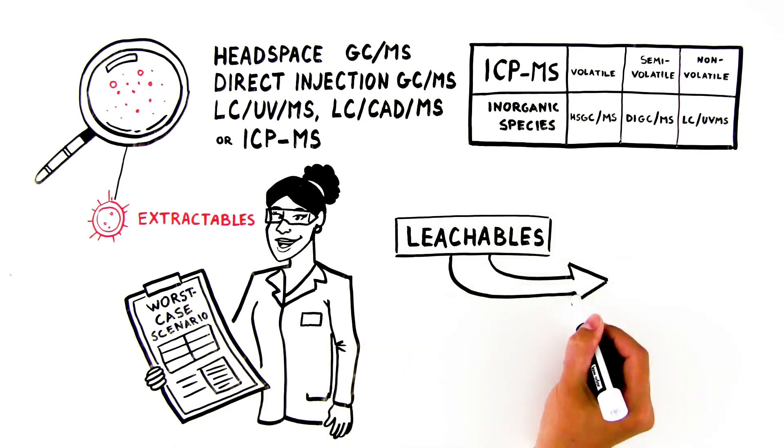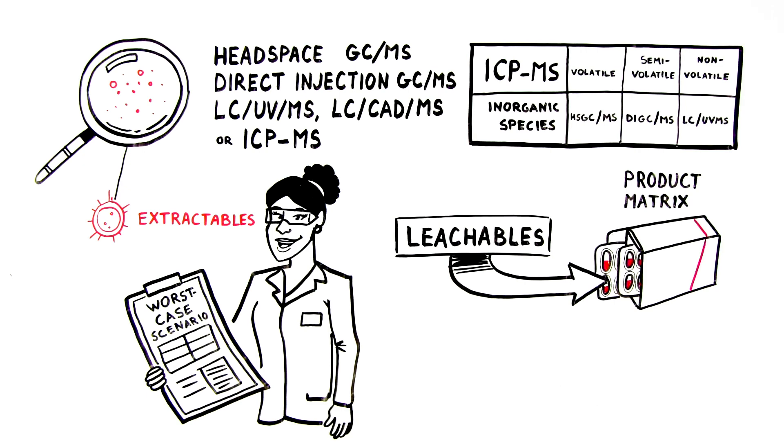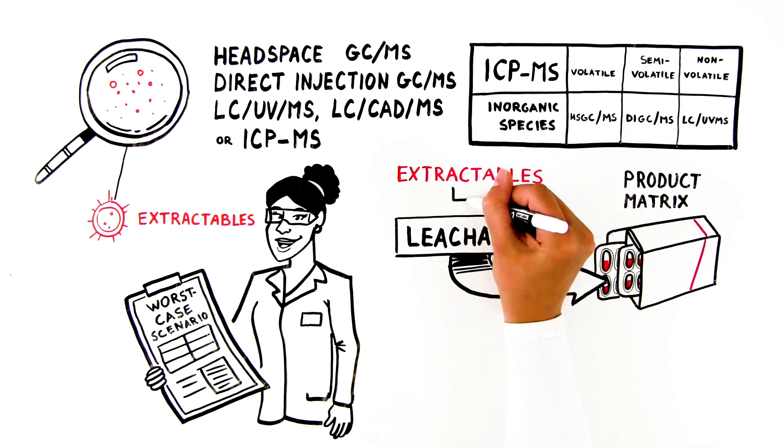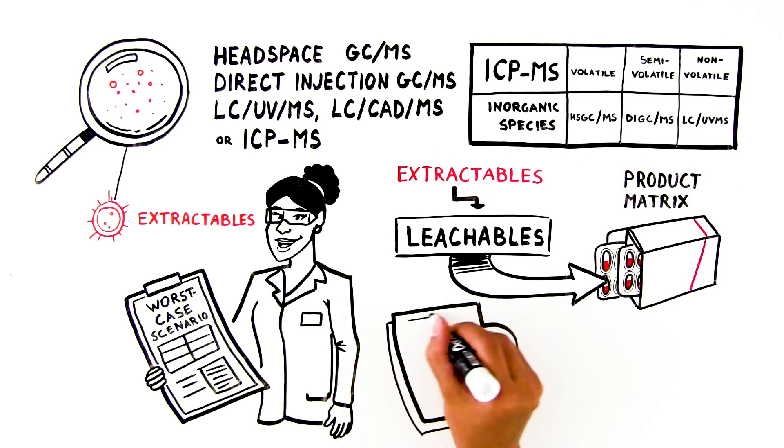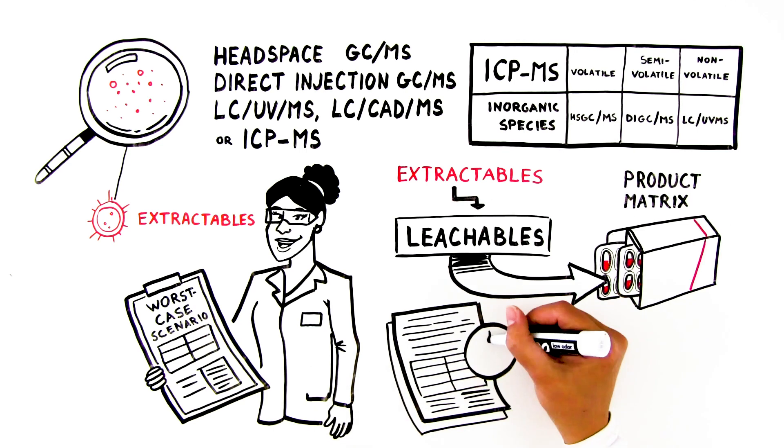Leachables are product-based compounds that have migrated into the drug product matrix under normal application or storage conditions. Leachables are sometimes classified as a subset of the extractables. We can perform forced or accelerated migration studies to assess for likely potential leachables that migrate under simulated environmental conditions.